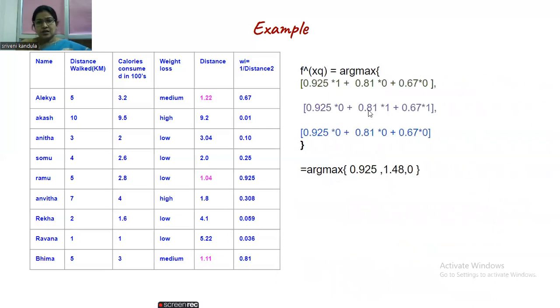When we substitute, these are the values we are getting. If you simplify, you are getting a value of 0.925 from the first one. Next, you have two values here. If you simplify, you are getting 1.48. The last one gives us 0. Now out of this, which one has the maximum value? Argmax will always give you the maximum value. Here maximum is 1.48, so this will become the target level. For which value of v we got this? It is low, medium, and high. For medium we got.